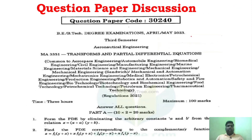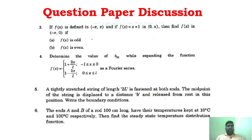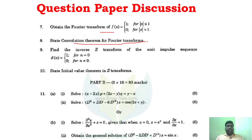Now we will see the question paper discussion for April/May 2023, Regulation 2021, common for mechanical and civil departments. The first 2-mark question asks to find the PDE by eliminating the arbitrary constant. The third question: F(x) is odd or even. Fourier series question, string 2-mark question, steady-state temperature distribution, Fourier transform, convolution theorem of Z-transform, inverse Z-transform, and initial value theorem of Z-transform.